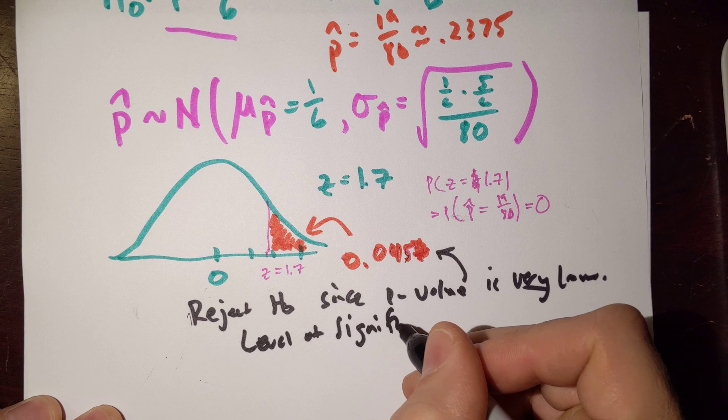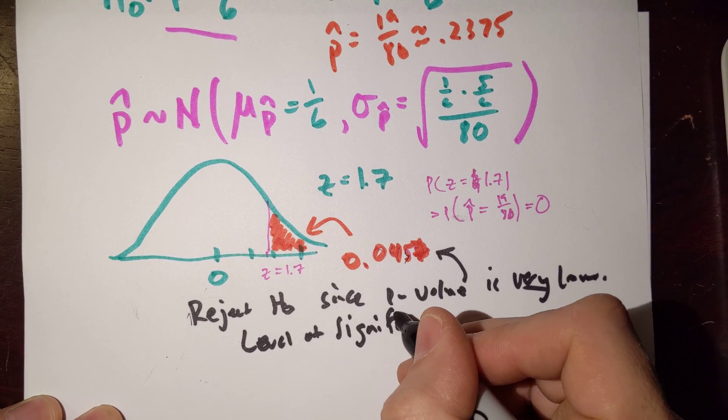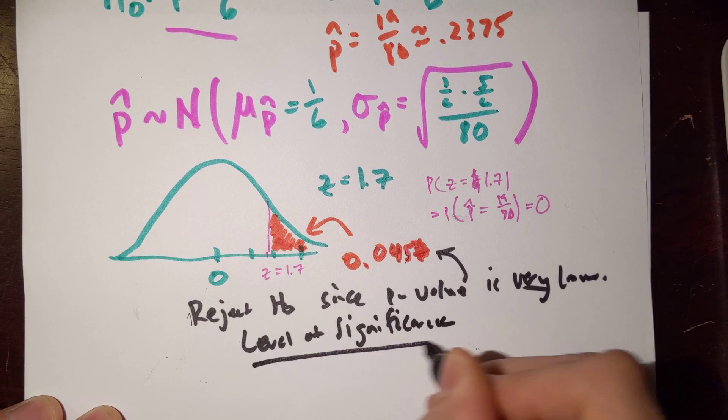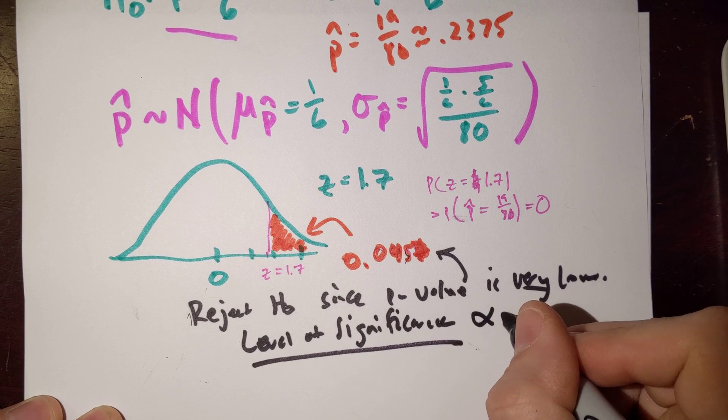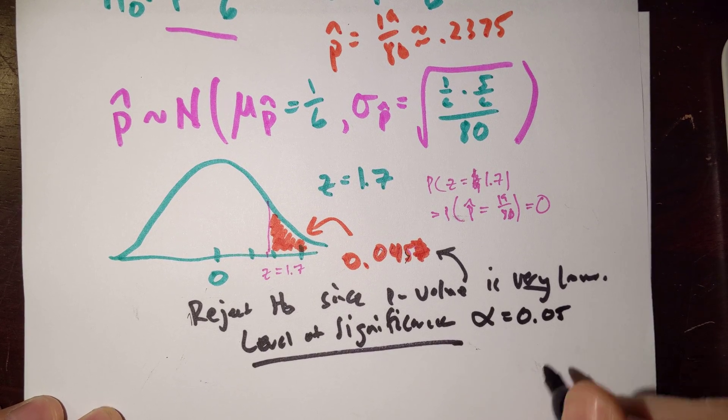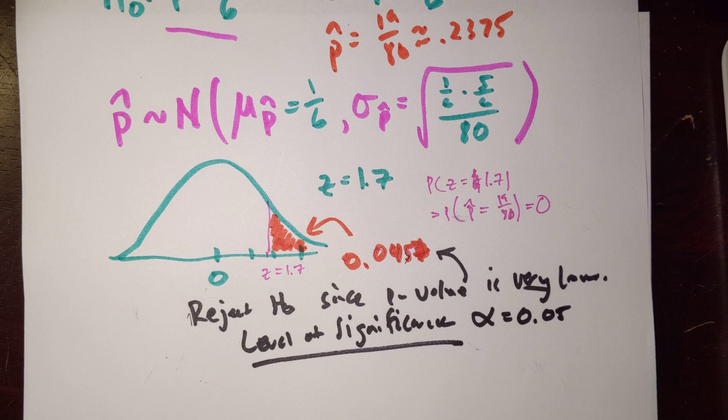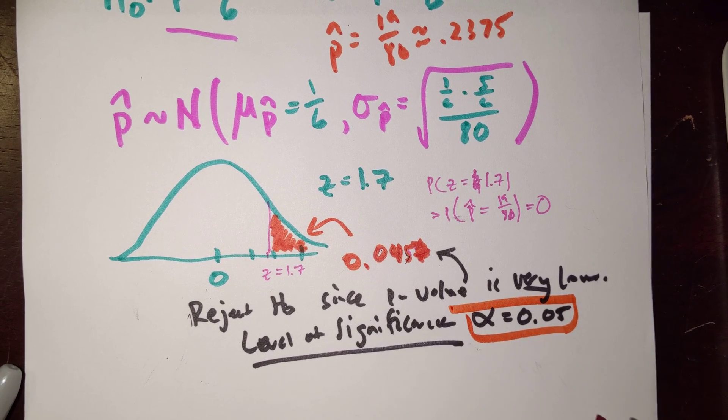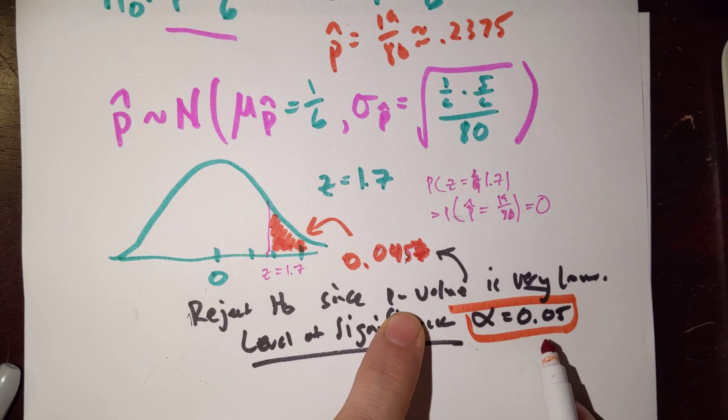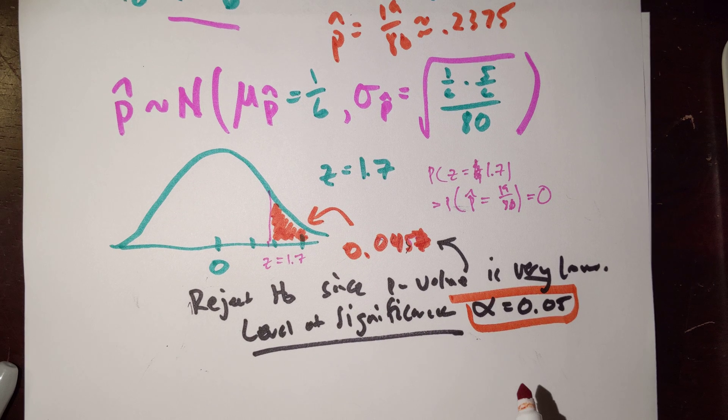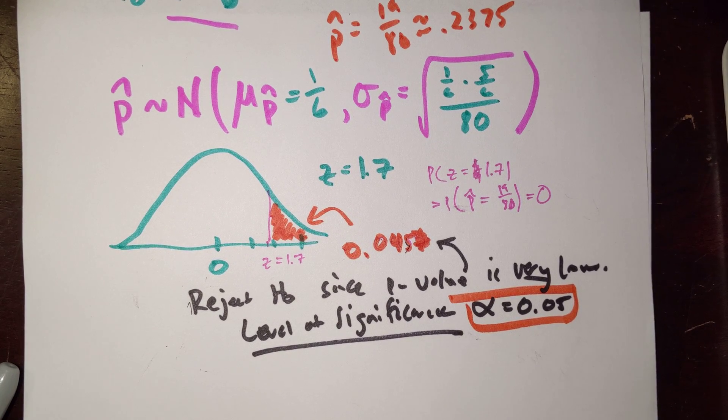Which we usually represent significance. We usually represent the level of significance with the Greek letter alpha. And we could say, in this case, if our level of significance was 0.05, then we would reject the null hypothesis because the p-value is, in fact, lower than 5%.